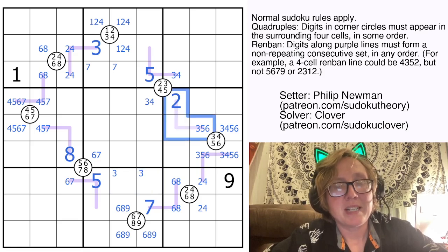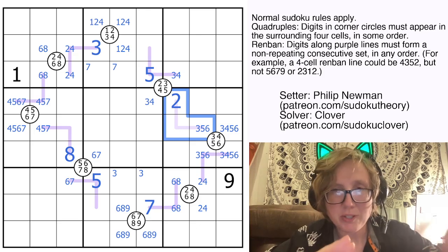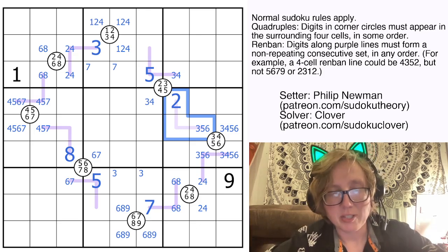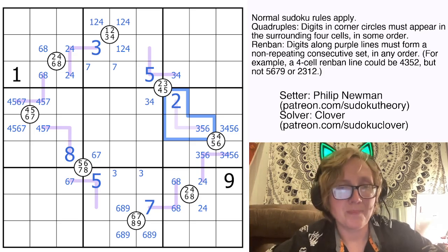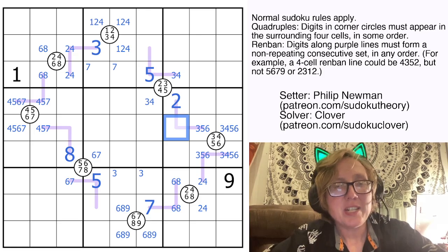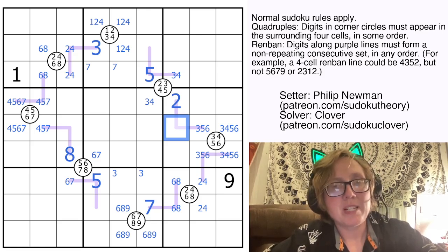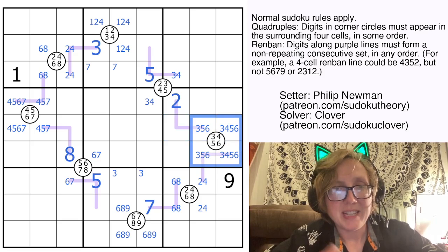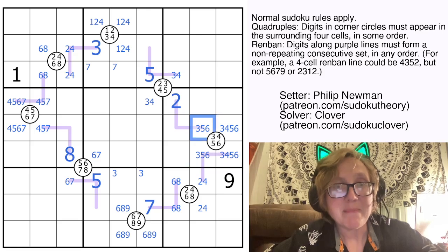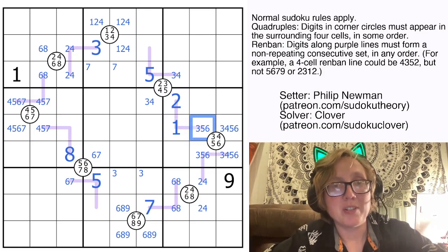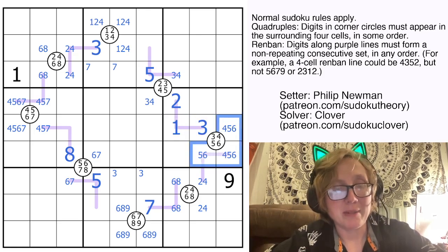So what's our next move? Let's look at some of these other Renban lines. So this one definitely has a 2 on it. And so in order to have 2 in a set of 3 consecutive digits, we have to have that set be either 1-2-3 or 2-3-4. This digit can't be either 3 or 4 because we know 3 and 4 are both in this group of 4 cells. Therefore, that can only be 1. So that's a 1, that's a 3, and we can eliminate 3 from these cells.